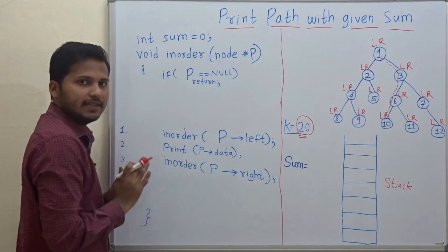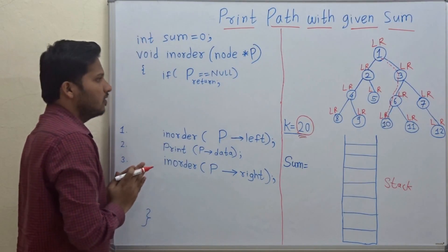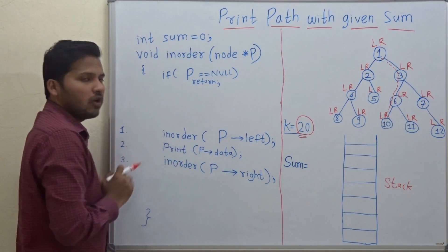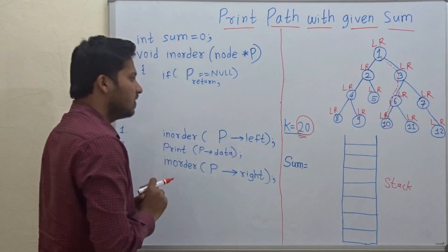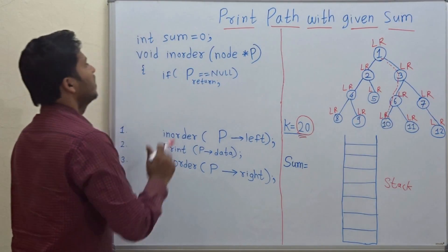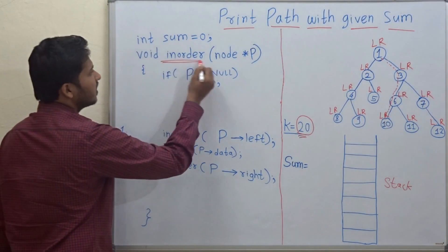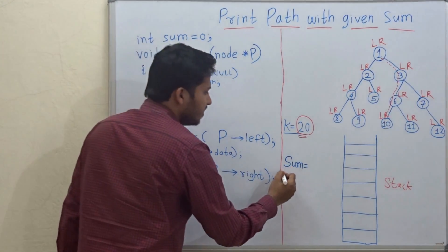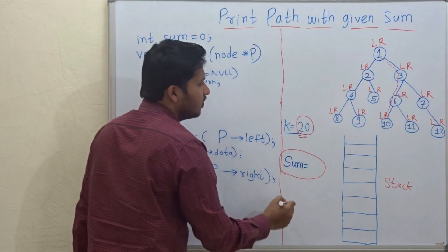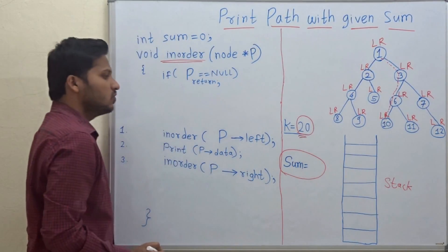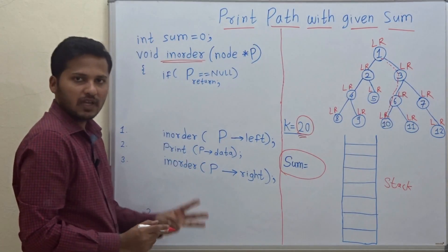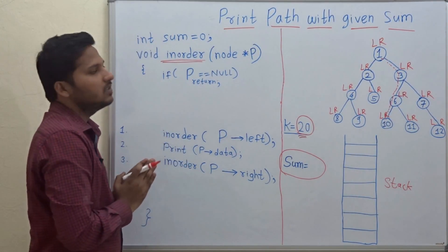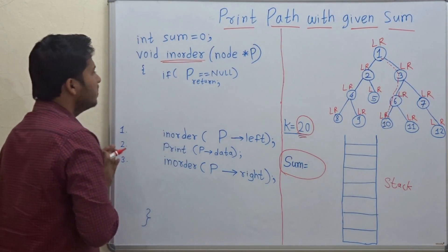Let's see how to write a program for printing the path with the given sum. For printing the path with given sum, we are going to use the in-order traversal of binary tree, a variable named sum, and a stack. These are the 3 things which we are going to use to print the path and check the path for that given sum.